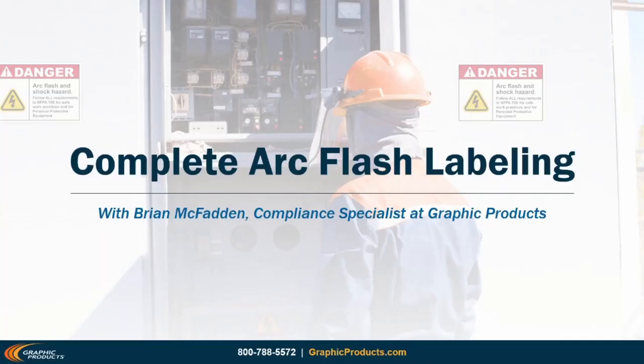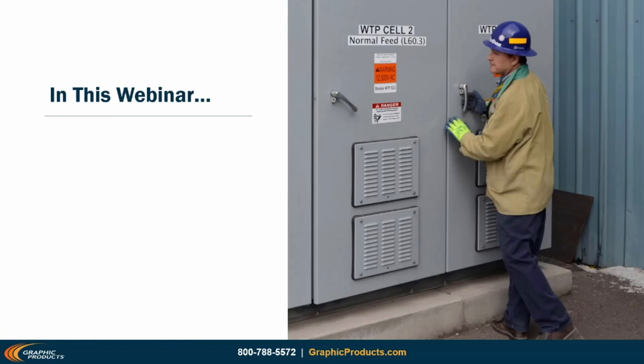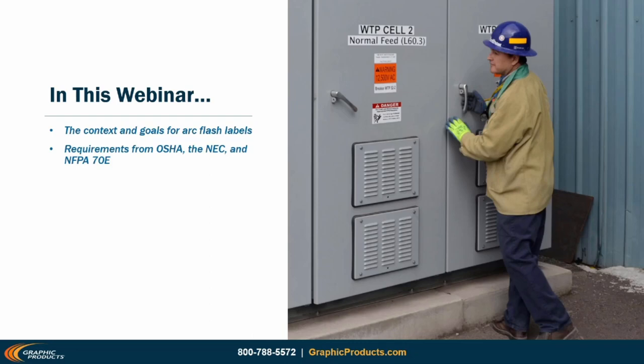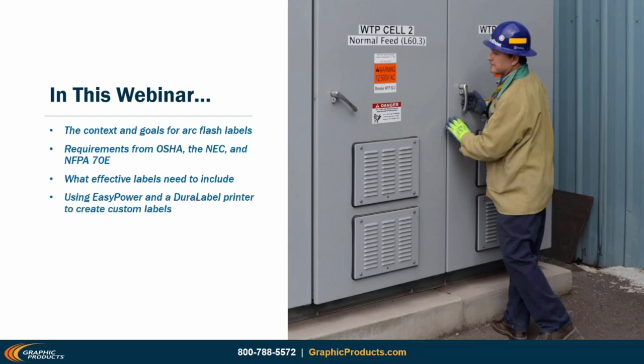Thank you for joining us for today's webinar on complete labeling for arc flash hazards. I'm Brian McFadden, a compliance specialist with Graphic Products. In this webinar, I'll talk about the key elements of arc flash labeling: a quick overview of the context behind these signs, the requirements from OSHA, the NEC, and NFPA 70E and how those requirements interact, what detailed labels described by NFPA 70E need to include, and how to use EasyPower and a Duralabel printer to create your own arc flash labels.